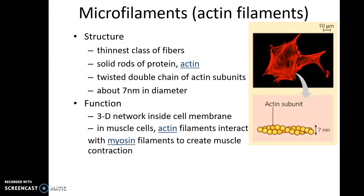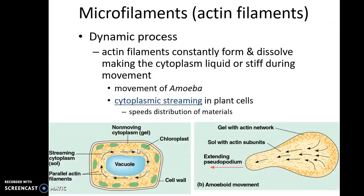The second type of cytoskeletal element is the microfilament. Microfilaments are the thinnest class of filaments, made up of solid rods of protein — majorly actin — and are therefore called actin filaments. They are twisted double chains of actin subunits, about seven nanometers in diameter. They help in forming a 3D network inside the cell membrane, and in muscles, actin along with myosin helps in muscle contraction.